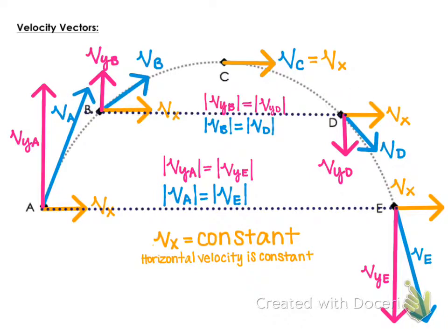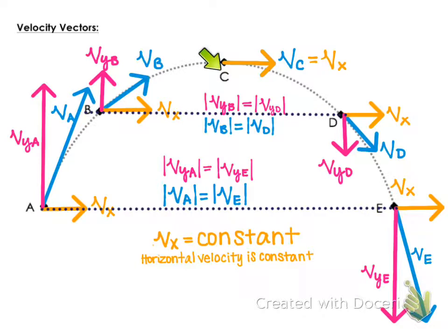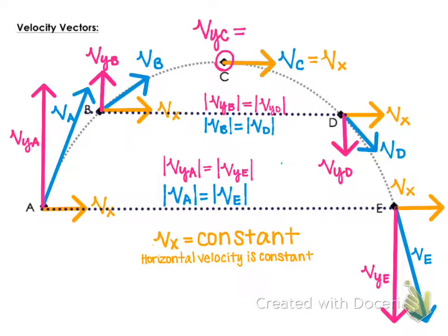This symmetry has to be at same-level points. However fast your football was going going up, gravity slowed it down, but gravity has sped it right back up to that same speed coming back down. A really key point that people frequently misunderstand: right at the top of the path, your object is still moving — but only in the horizontal direction. At point C, the vertical velocity is zero. Not the total velocity — the total velocity is the horizontal velocity. People tend to say the total velocity is zero at the top, and that is not true.